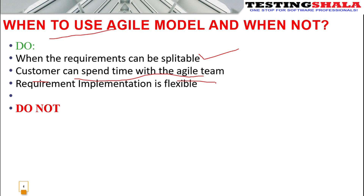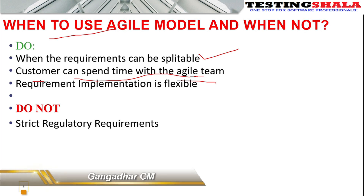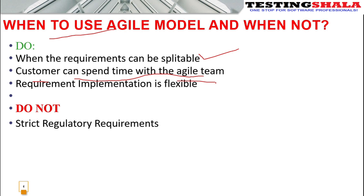When should we not use agile? First, when there are strict regulatory requirements or strong regulatory compliances that the project must adhere to, you should not use agile. Second, when the timeline is very fixed and firm — not flexible — and the team must deliver strictly on time, we should not use agile methodologies.